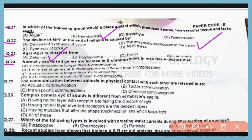Question number 24. Normally sex-linked genes are located in X chromosomes. In case of men, this indicates that X chromosome is larger than Y chromosome. Correct answer is option C.